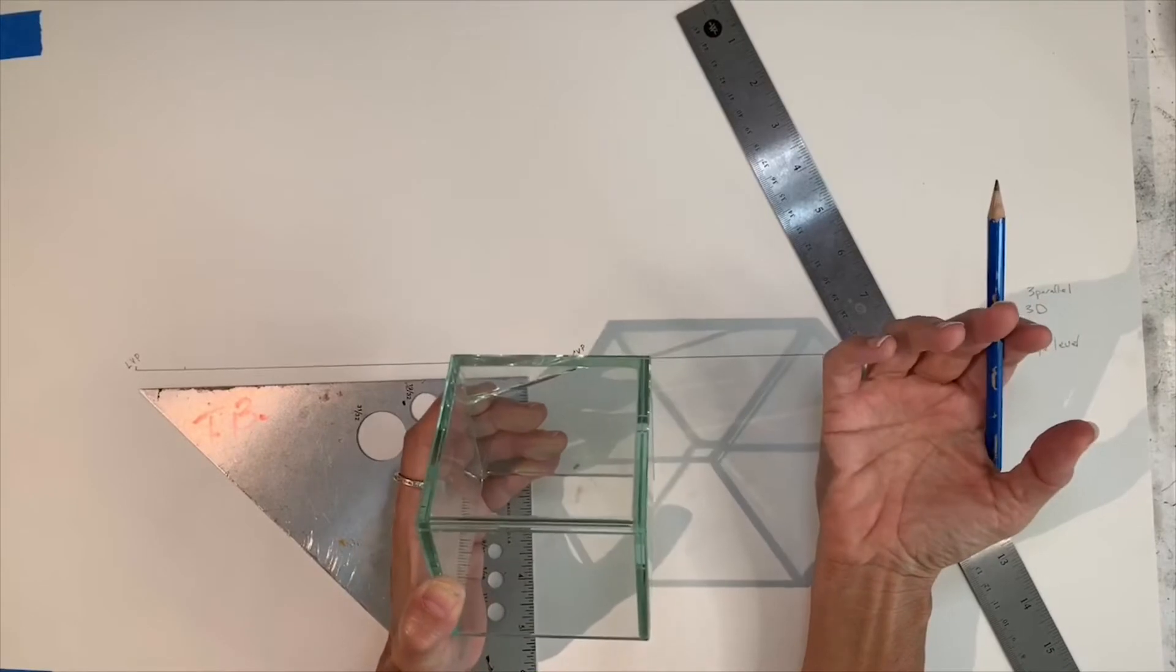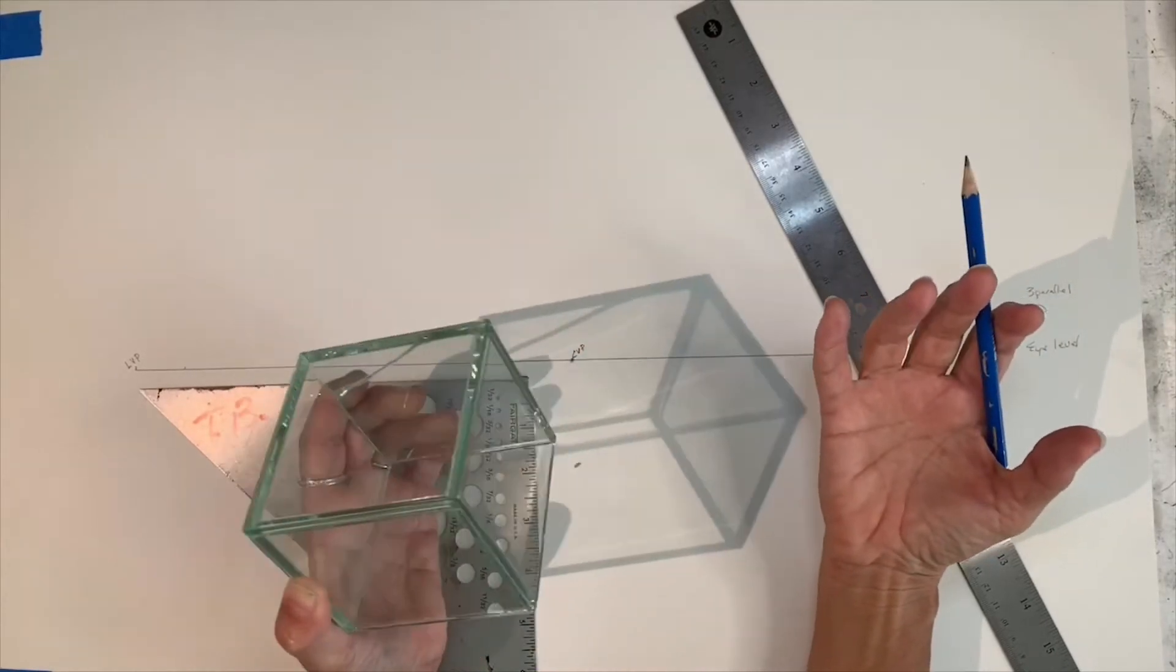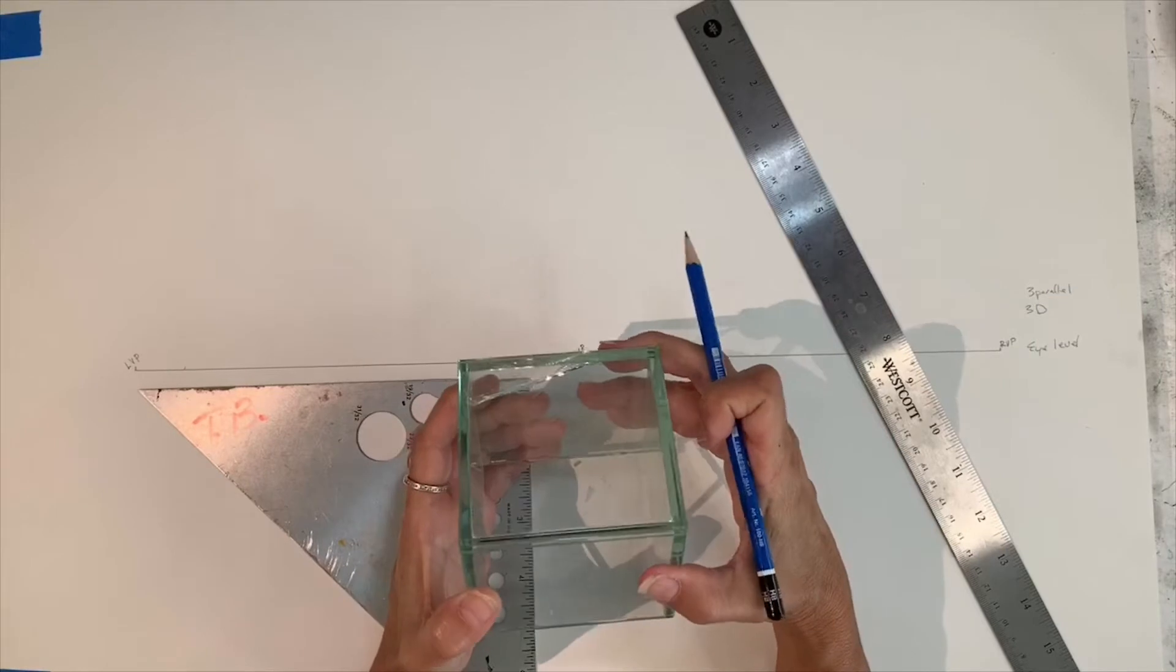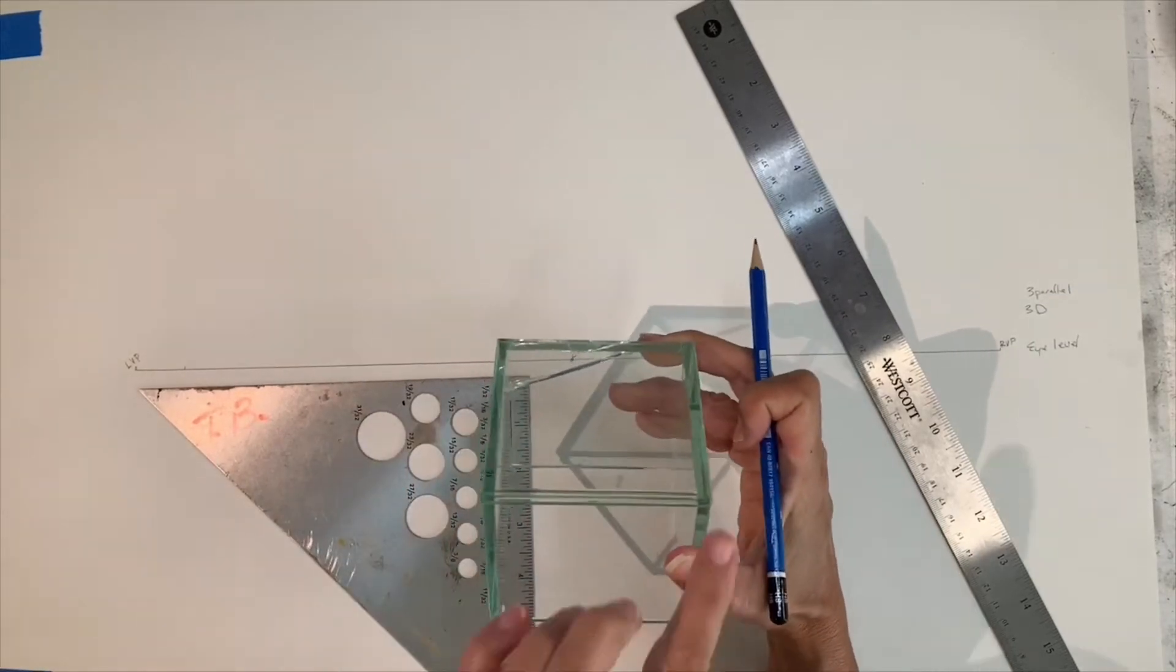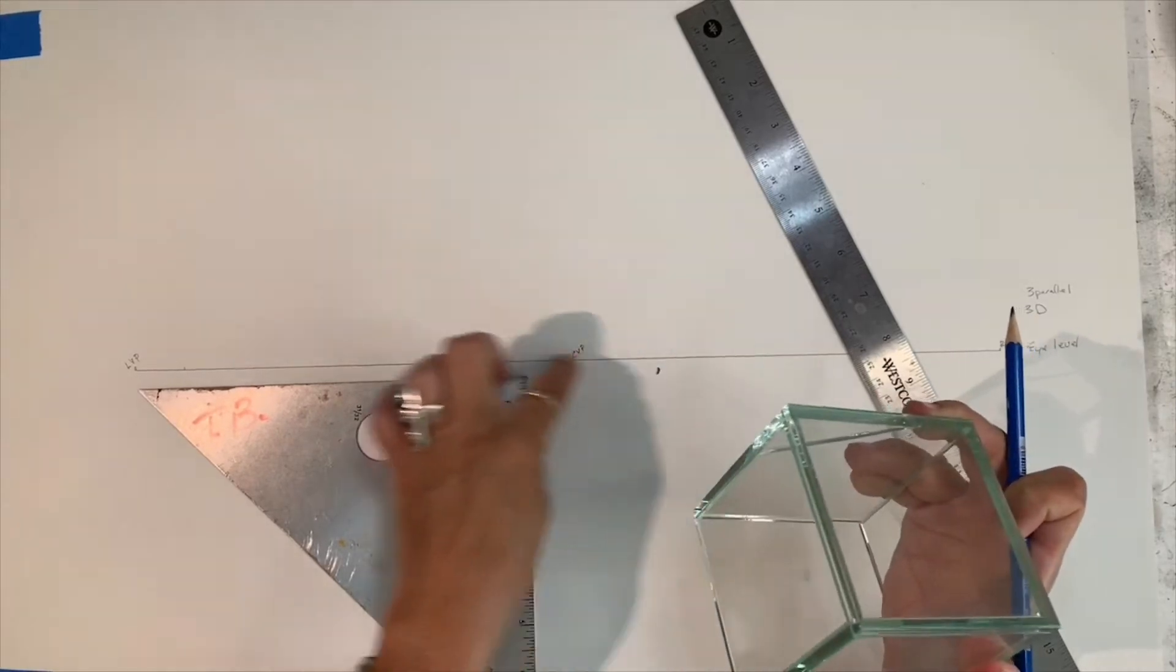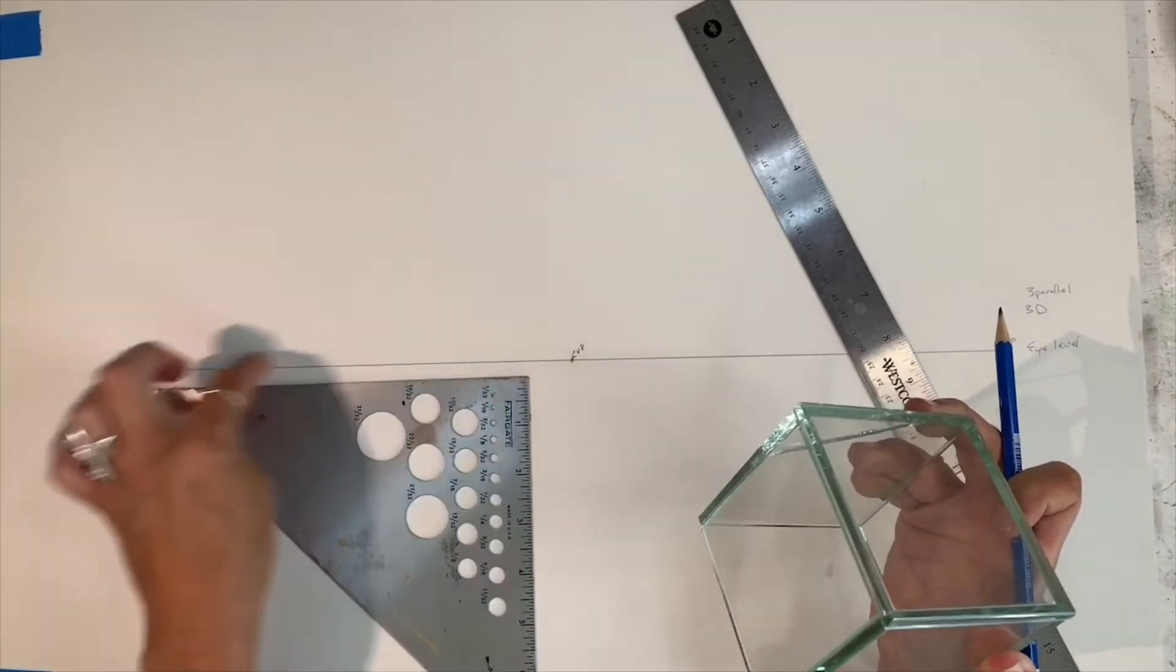So to demonstrate that, I'm going to draw some cubes in space. A couple more things to remember. When you are drawing, you want to make sure that your vertical lines are perpendicular to your horizon line. That's super important.